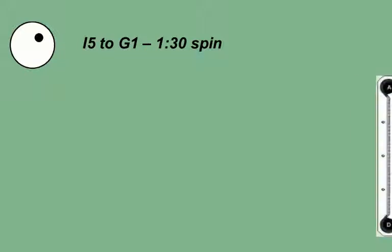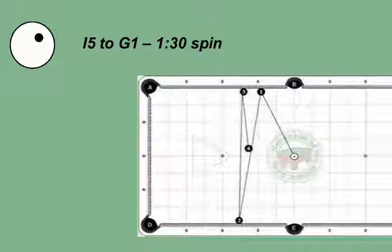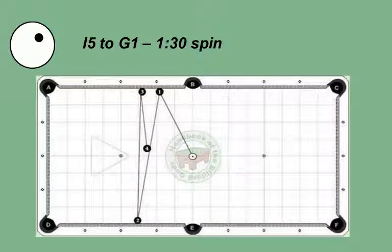This is the 1:30 spin from the I5 position. The reverse spin off the first rail straightens out the path and makes it go perpendicular. This sends the cue ball back and forth side to side on the table. At the third rail, the cue ball has some reverse spin, and the ball starts backtracking. If you are kicking to a ball in this zone, the ball path will help make good hit on the target object ball.